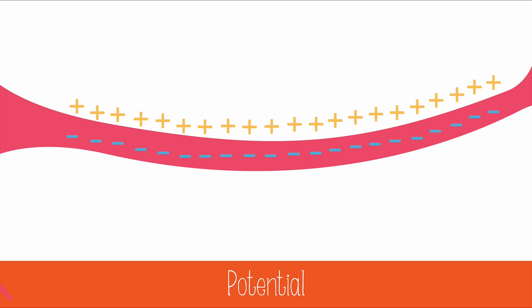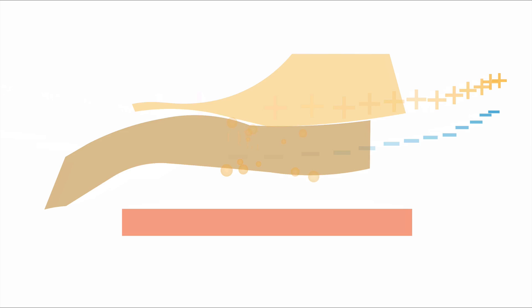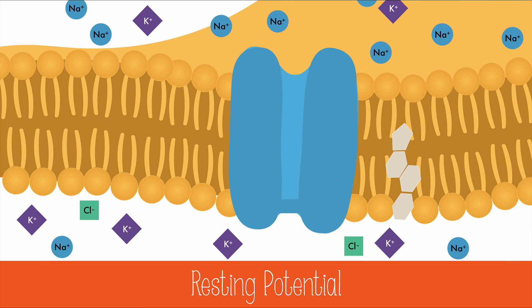Let's look even closer at the cell membrane. At rest, when a neuron isn't firing, there's a high concentration of sodium ions outside of the cell membrane, and also a high concentration of potassium ions in the cytosol of the cell.